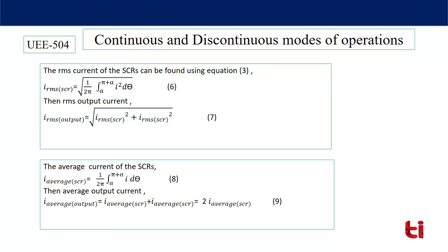Let's find the parameters of the circuit, like RMS output current and average output current. The RMS current of each SCR is found from equation 3: the square root of (1/2π) × ∫ i² dθ from α to (2π + α). The RMS output current equals the square root of the sum of squares of RMS currents for mode 1 and mode 2. Since both are equal, the RMS output current equals √2 times the RMS current for mode 1. The average output current is twice the average thyristor current in mode 1.